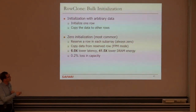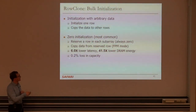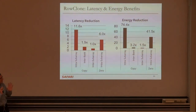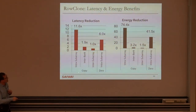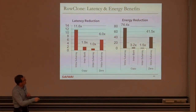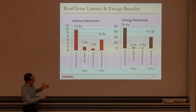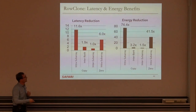For arbitrary initialization, initialize one row with those values, then copy to the other rows. If you're initializing a billion rows, you do it once and amortize the cost through Row Clone. Zero initialization — the most common case — reserves a row in each subarray as always-zero; you copy from the reserved row. This gives significantly lower latency and significantly lower DRAM energy. The paper also discusses system design issues to enable Row Clone. Applications need to communicate occurrences of bulk copy and initialization across system layers, which means changes to the ISA and the operating system.